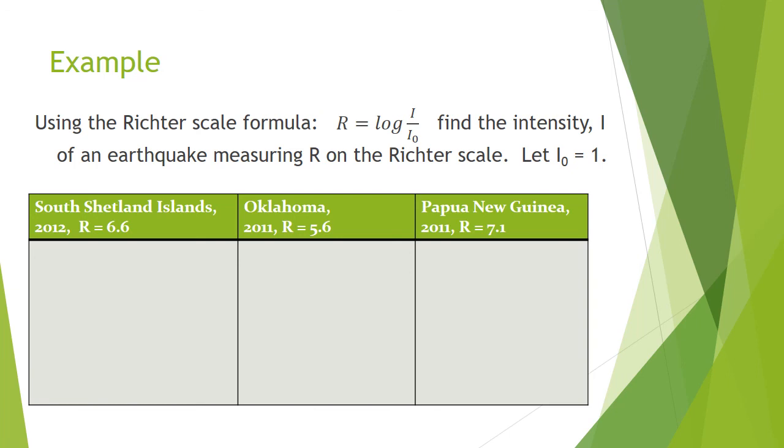We have the Richter scale formula here, and what we're going to do is find the intensity of an earthquake. So I sub 0 is 1, so really it's log of I over 1. And what you're going to do is you're going to find I, the intensity for these three earthquakes. Pause the recording, give this a try, and resume to check your answer.